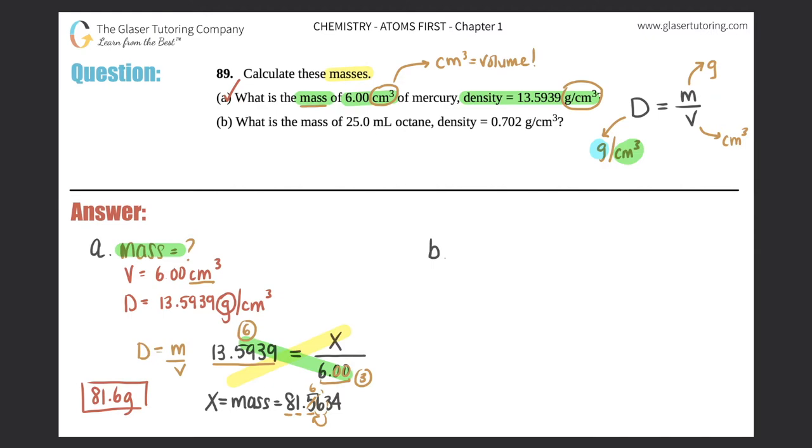Now we're moving on to B. What is the mass of 25.0 milliliter octane? The density is 0.702 grams per centimeter cubed. Same thing here, we have to look for a mass, so that we don't know. The volume was 25.0 milliliters, and the density they gave us was 0.702 grams per centimeter cubed.